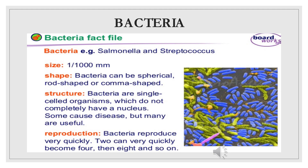Some bacteria cause disease, but many are useful. The information needed to control the cell is carried on a single thread of DNA. Reproduction: bacteria reproduce very quickly. In the right conditions, they can reproduce about once every 20 minutes. Two can very quickly become four, then eight, and then so on.